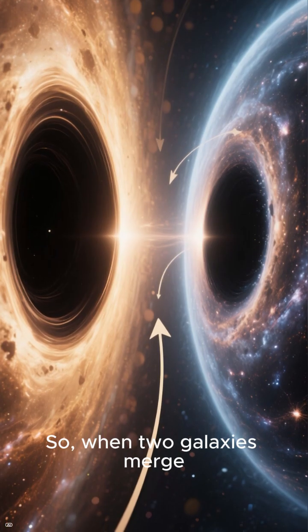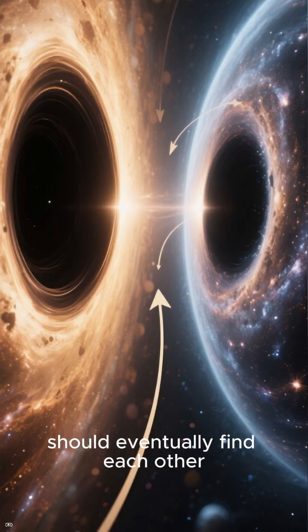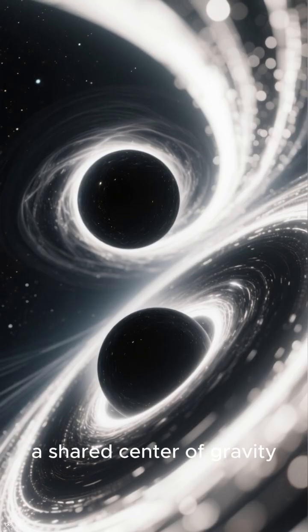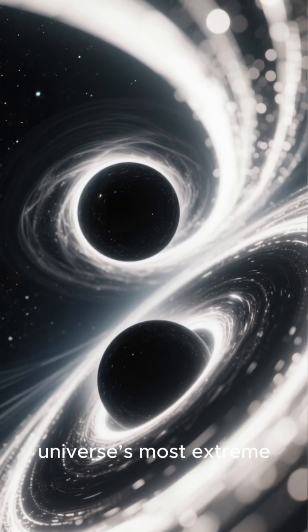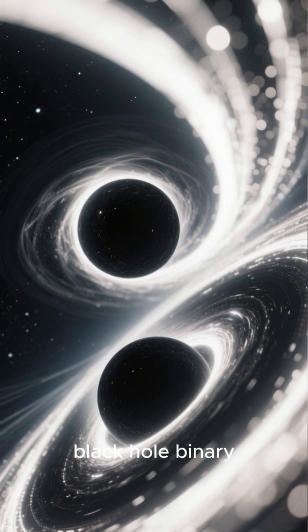So when two galaxies merge, their central black holes should eventually find each other and begin orbiting a shared center of gravity, forming one of the universe's most extreme systems, a supermassive black hole binary.